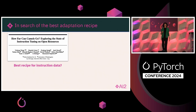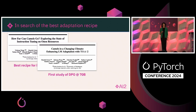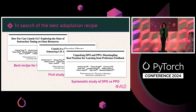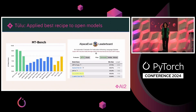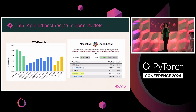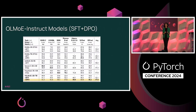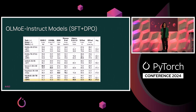We started studying all these models to find the best recipes for instruction data, how to use it in larger models, and began doing preference tuning, comparing different algorithms like DPO versus PPO. At the time of finding these best recipes, some external teams evaluated our Tulu models, showing that our model was in fact better than ChatGPT at the time — this was a couple of years ago — just behind GPT-4. We used the same recipe on our OLMo models, especially OLMo-E, and using our instruction-following recipe, OLMo-E is even better compared to bigger models.